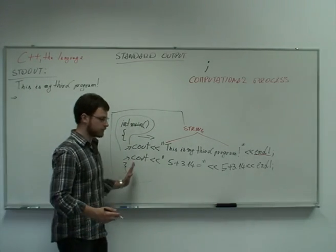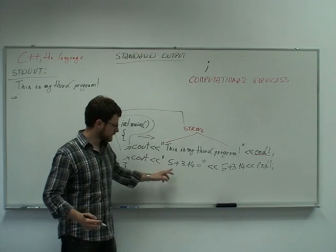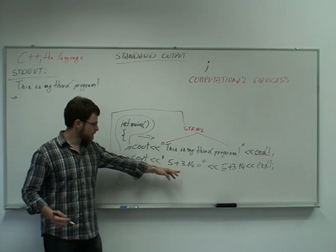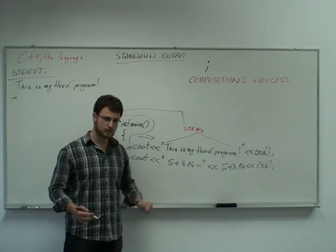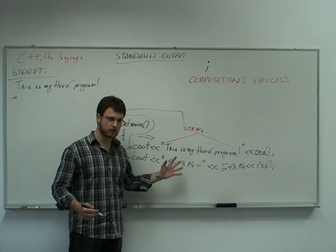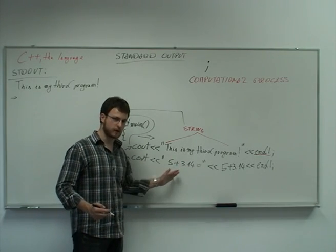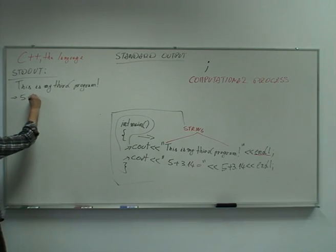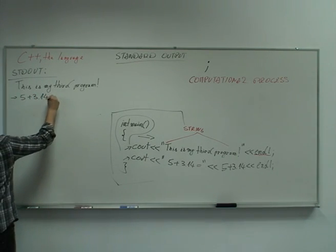So, proceeding in the same order from left to right, the first thing that I encounter is the string: 5 plus 3.14 equals. This is not an expression. This is a string. Again, there's no calculation going on here. I have to copy literally what's written here. So that's what I'm going to do. 5 plus 3.14 equals.